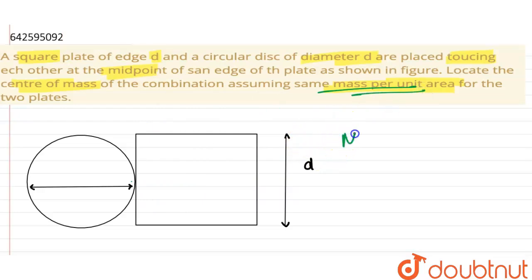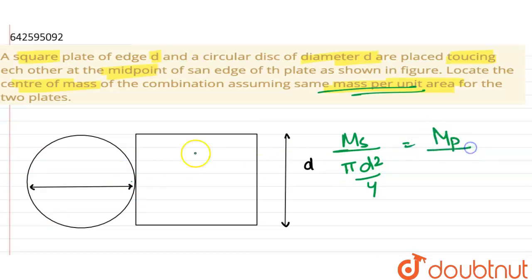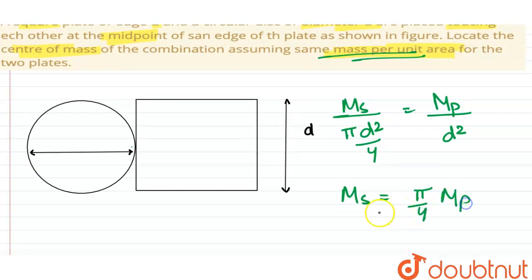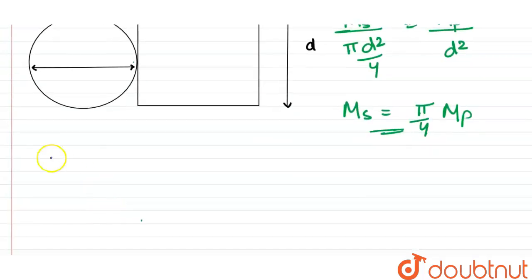Same mass per unit area means: mass of disc divided by area of disc, which is πd²/4, equals mass of plate divided by area of plate, which is d². So this gives us mass of disc equals (π/4) times mass of plate.